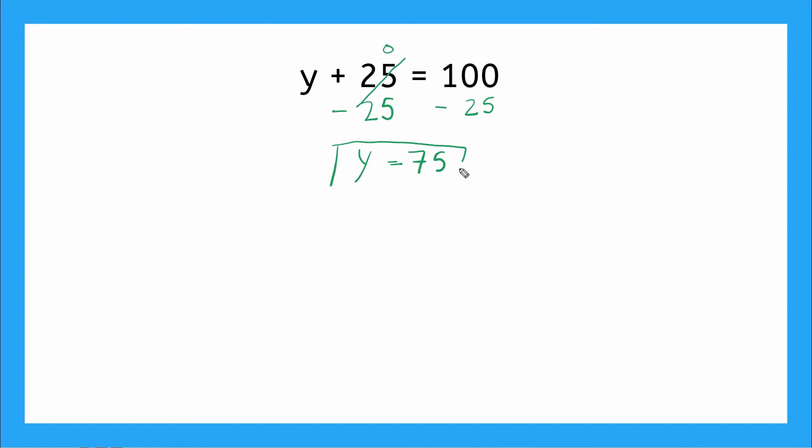So this is my answer. But let's check it and make sure it's right by using substitution. So I had y plus 25 is equal to 100. That was my starting. And I'm going to use substitution, so I'm going to plug it in here. I have 75 plus 25 is equal to 100. 75 plus 25, that's 100, equals 100. Checks out. Well, we did it right.